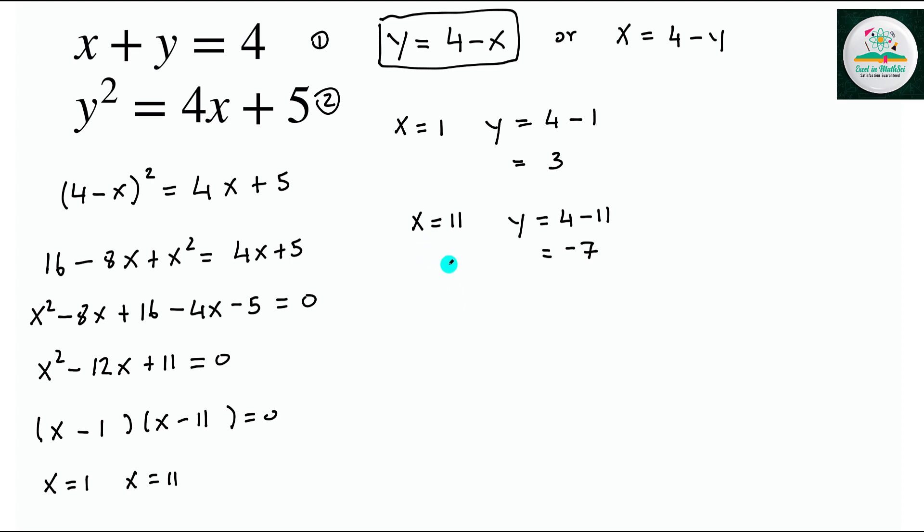So the solution to this system of equations is x equals 1, y equals 3. These pairs go together: x equals 11, y equals minus 7. These are the points of intersection of this line with this function here.